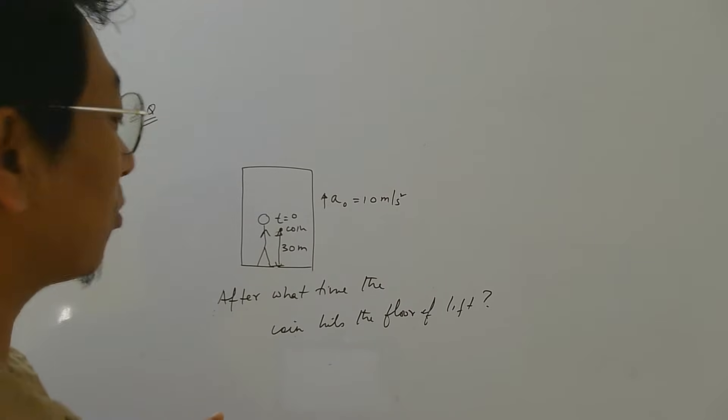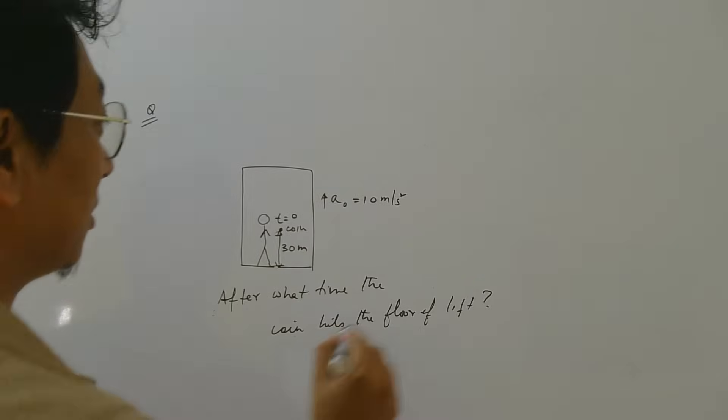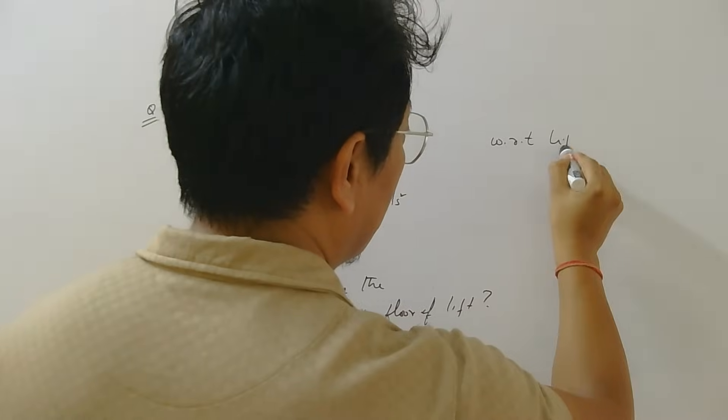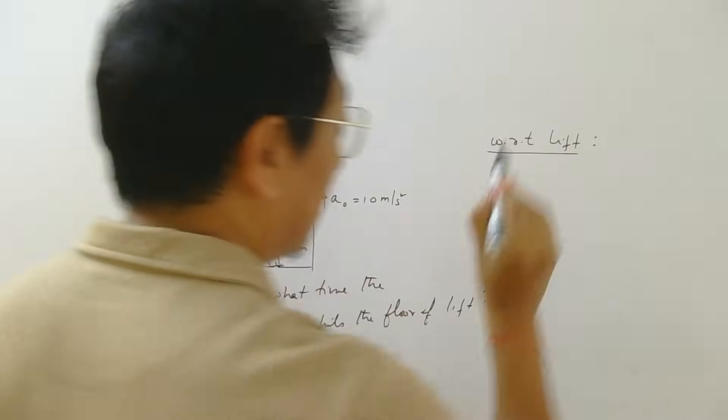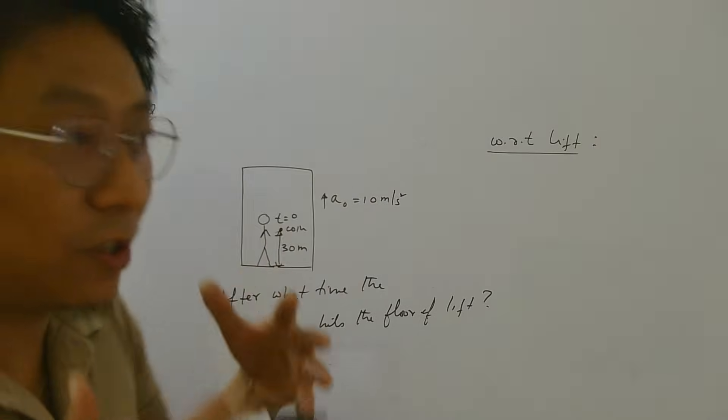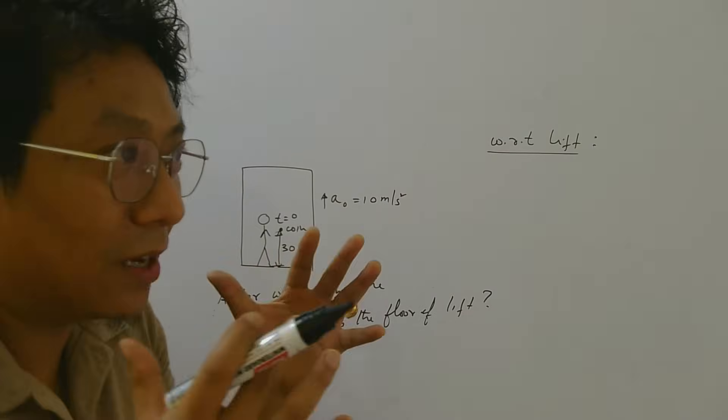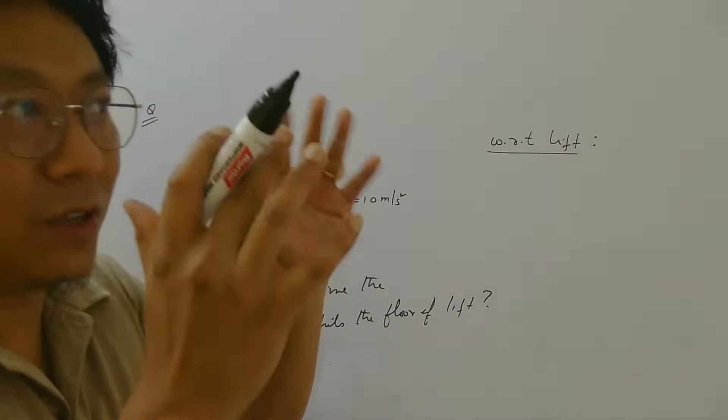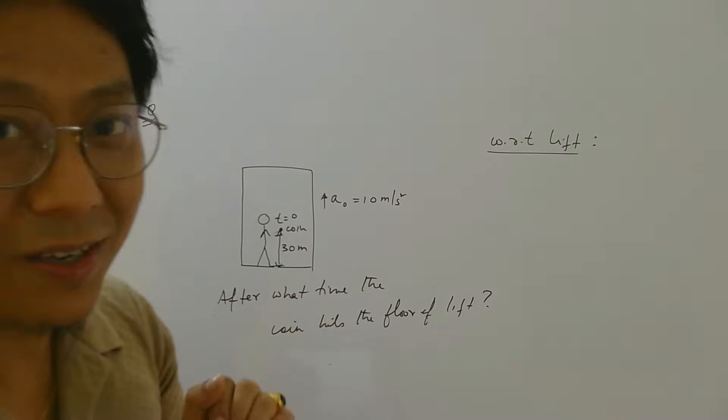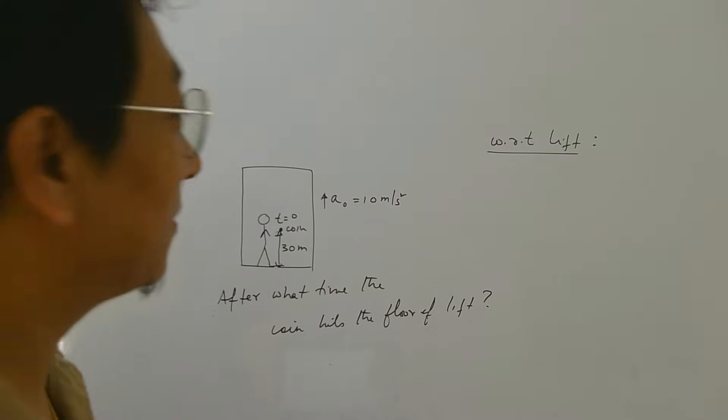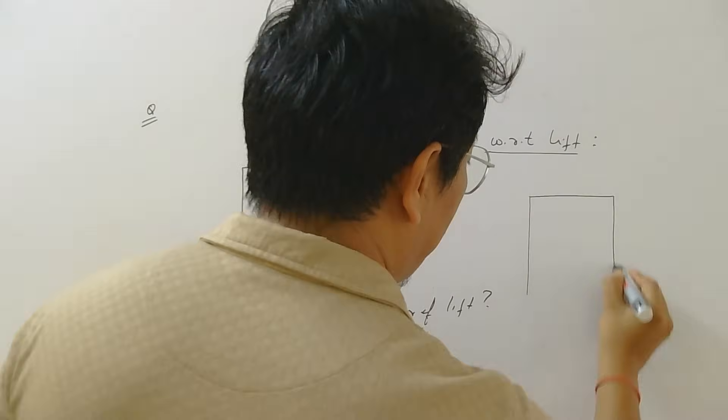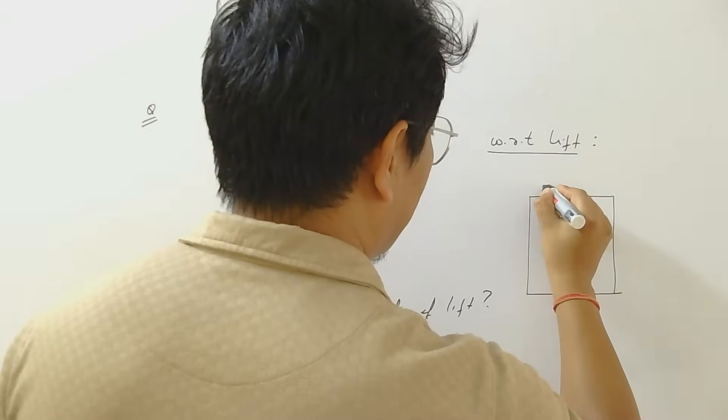If you do this problem from lift frame, it will be very easy because if you do the problem with respect to lift frame then you will not show the lift moving, right? Because if you are the observer inside the lift, you will not see the lift moving. Instead you will see outside things are going down maybe, but you will not see yourself moving up. You will not see the lift going up. So in this frame the lift will have no acceleration, so rest.